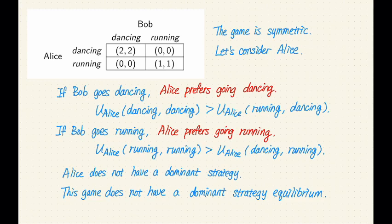If Bob chooses another action, then which action does Alice prefer? If we can find one action for Alice such that no matter what Bob does, no matter what action Bob chooses, Alice will always prefer the same action, then that action will be a dominant strategy for Alice.